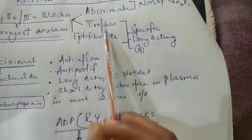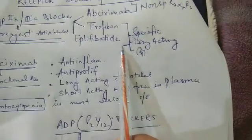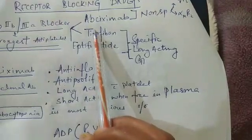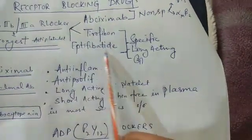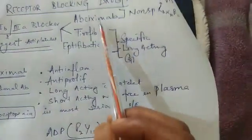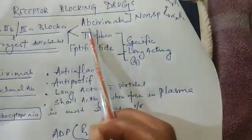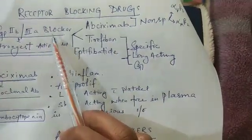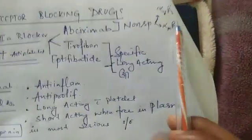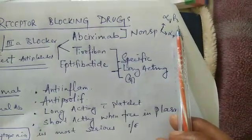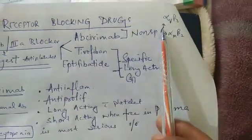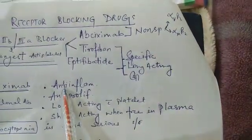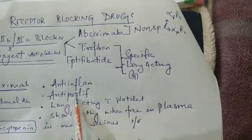All agonists cannot work on this receptor. That's why it is the strongest antiplatelet drug. The drugs in this group are abciximab, tirofiban, and eptifibatide. Abciximab is a non-specific blocker - it not only blocks glycoprotein IIb/IIIa but also blocks other receptors like alpha-v beta-3 and alpha-m beta-2. Because of blockage of these receptors, it acts as an anti-inflammatory as well as anti-proliferative drug.